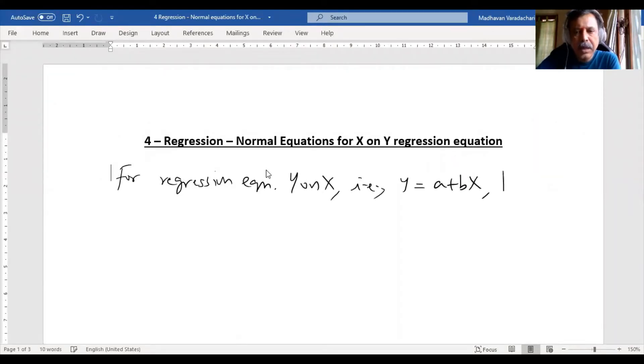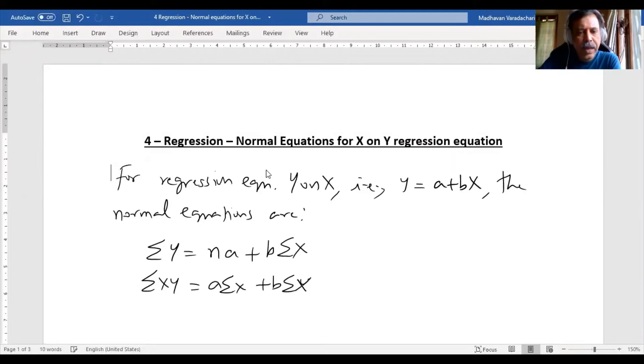The normal equations are: ΣY = NA + BΣX, and ΣXY = AΣX + BΣX².